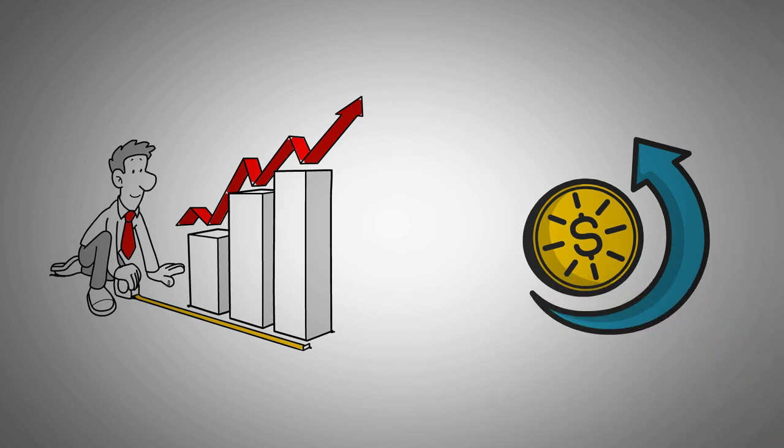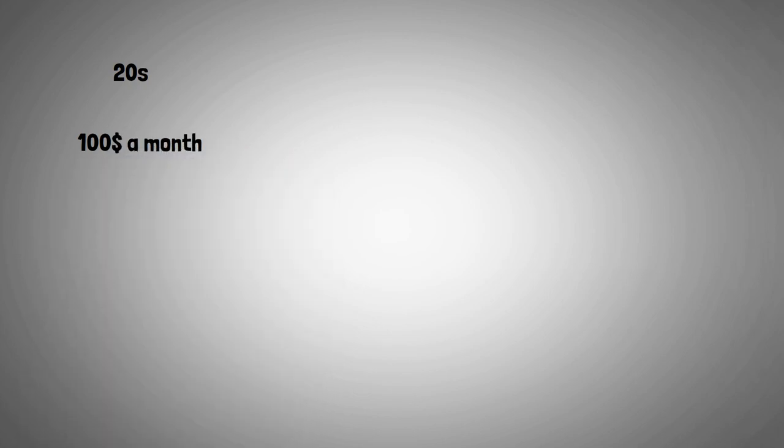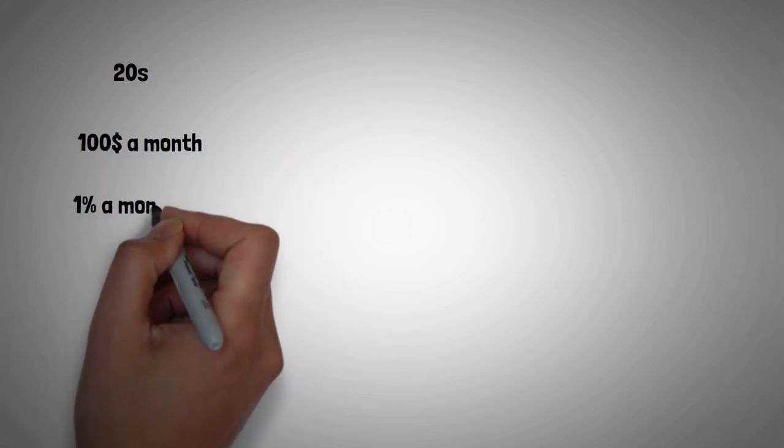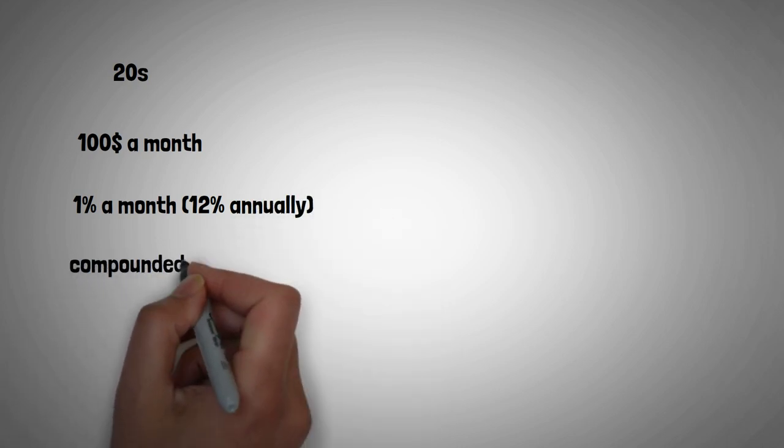Here's one example of its effect. Let's say you start investing in the market at $100 a month while still in your twenties. Then let's posit that you average a positive return of 1% a month, 12% annually, compounded monthly across 40 years.